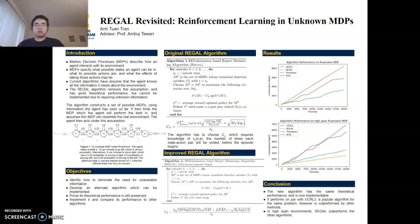The REGAL algorithm removes this restriction. It does assume the agent knows the possible states, actions, and rewards. However, it does not assume that the agent knows what the corresponding next state should be given an action taken in a state.